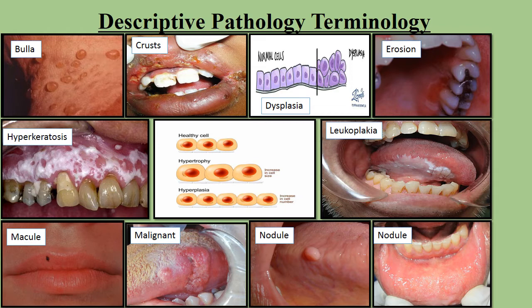Crust is dried serum on the surface. Dysplasia means abnormal development of cellular size, shape and organization. Erosion means shallow superficial ulceration. Hyperkeratosis means overgrowth of the cornified layer of epithelium. Hyperplasia means increased number of normal cells. Hypertrophy means increase in the size of the cell.